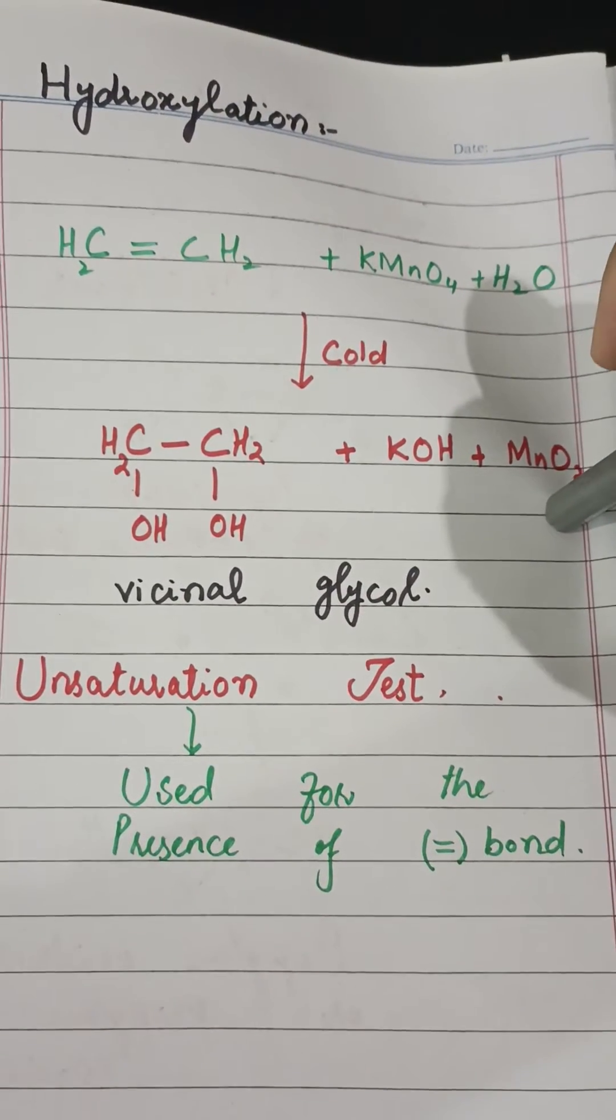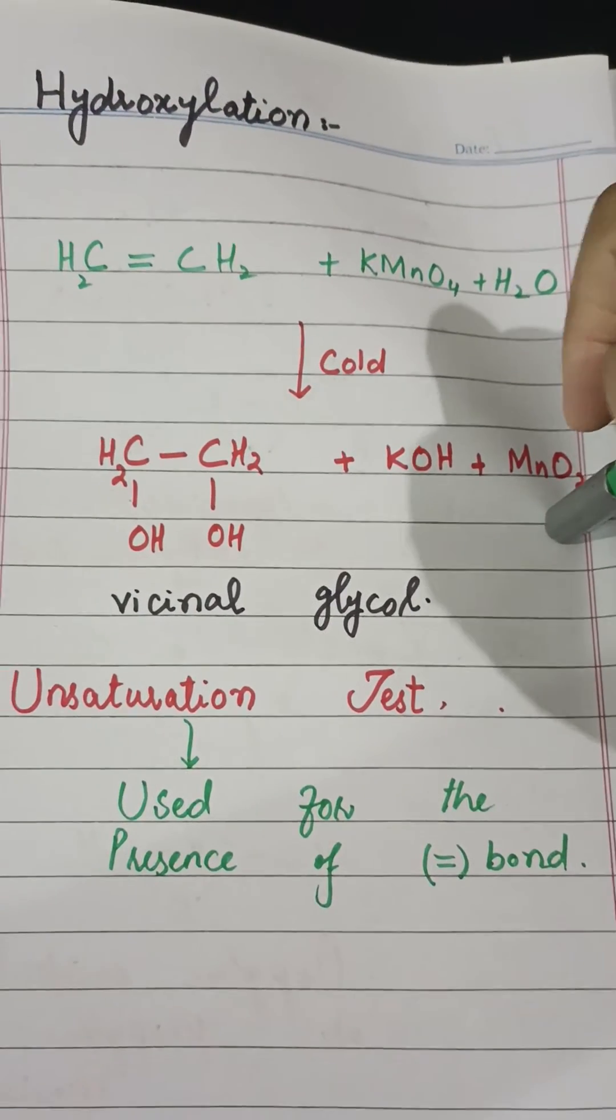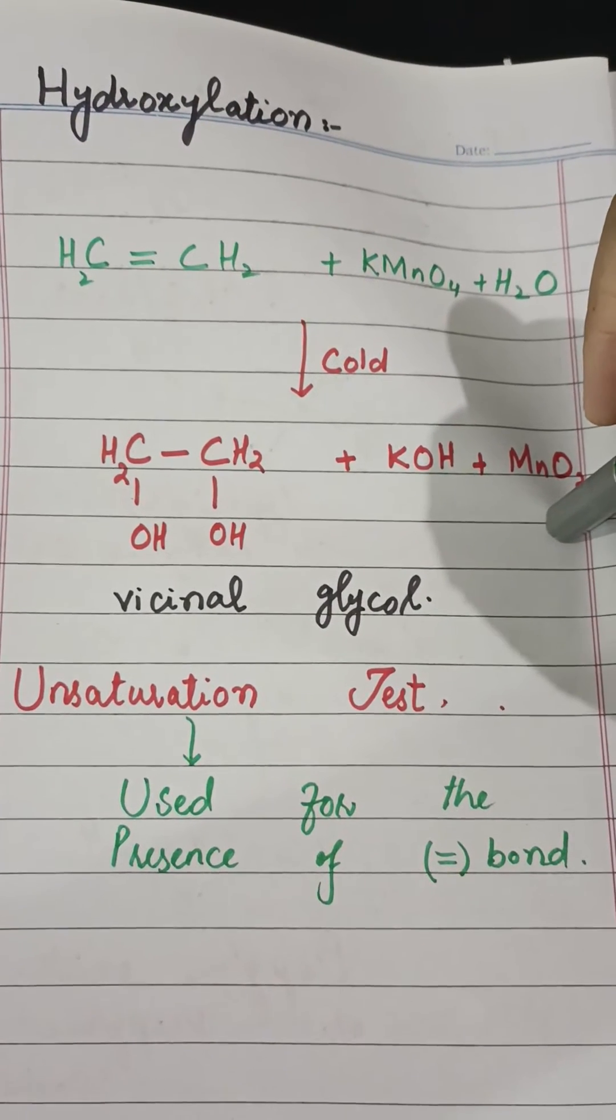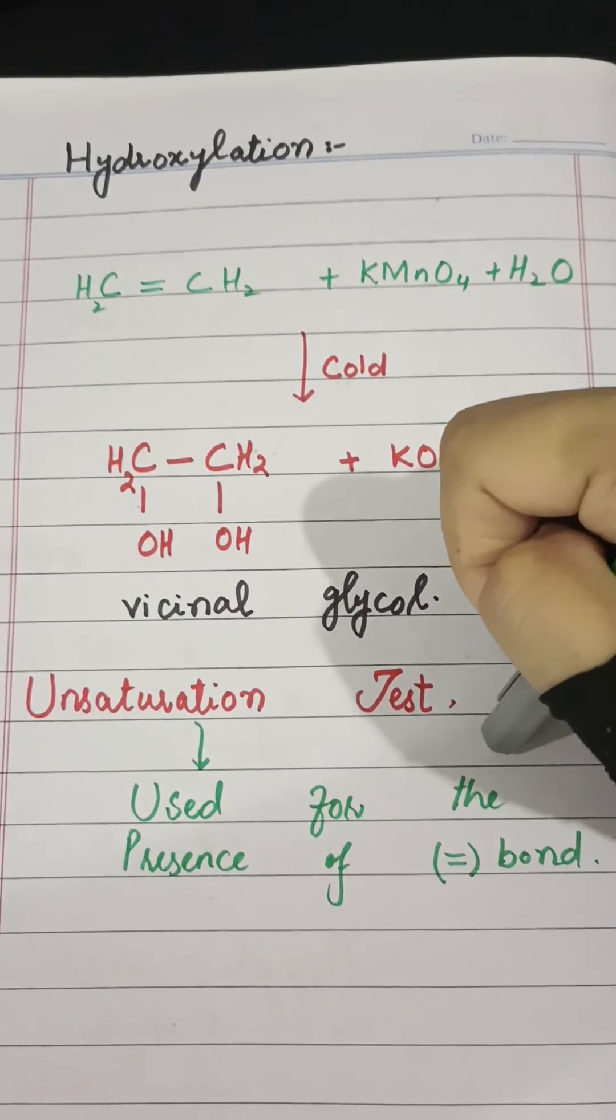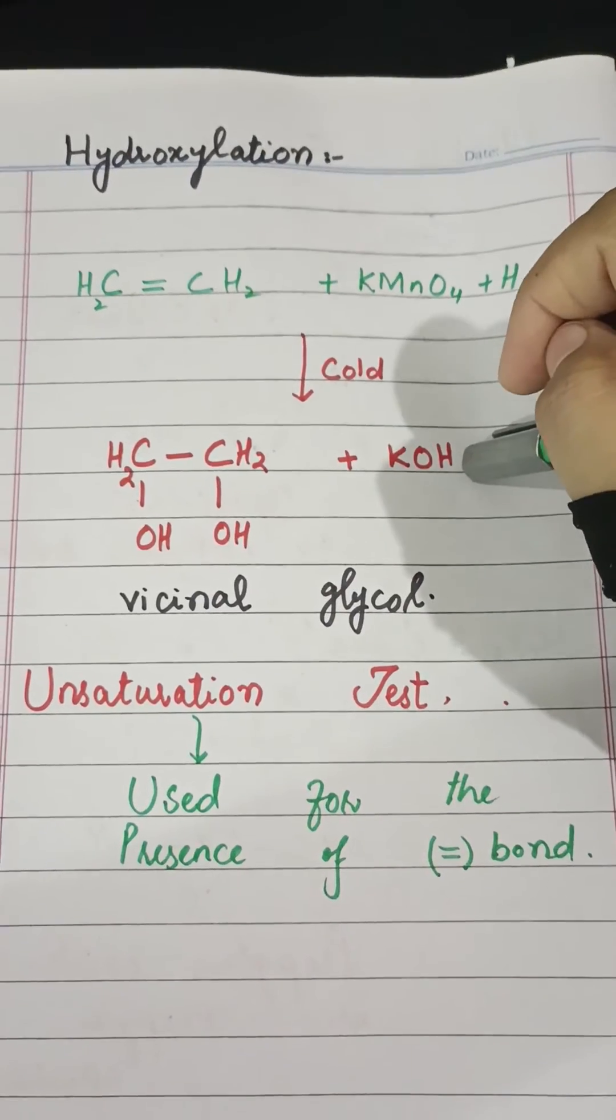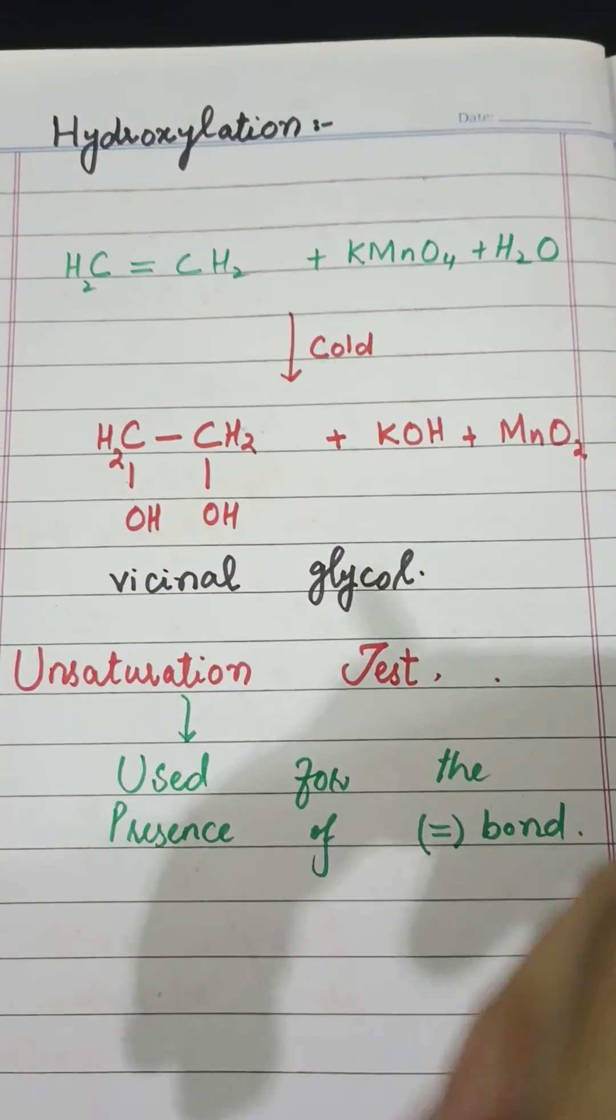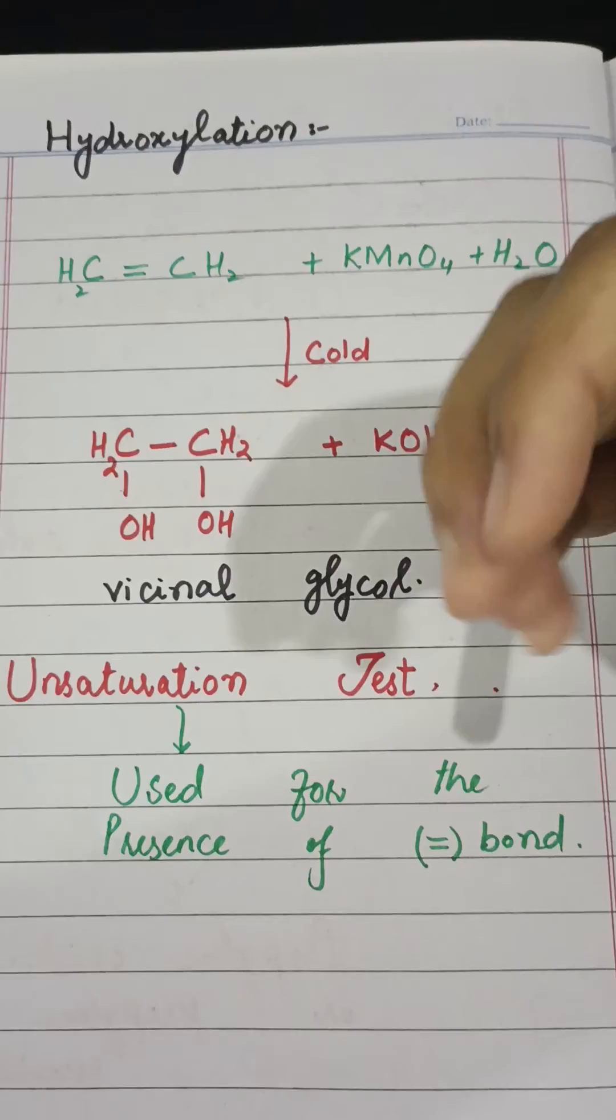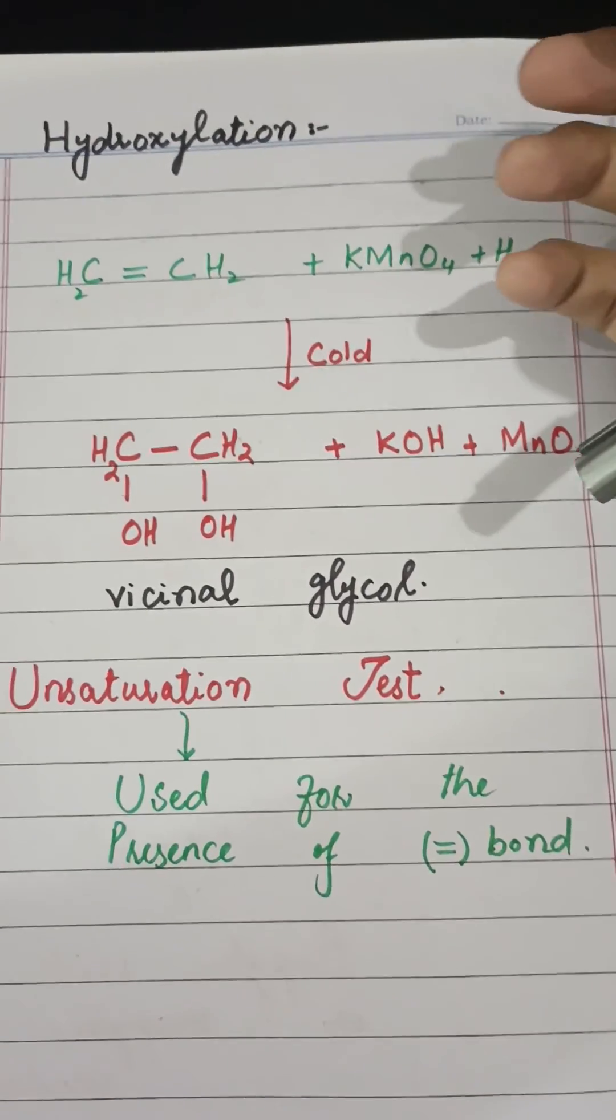This is also known as a confirmation test for the presence of unsaturation of the double bond. You can also use the term unsaturation test for this. This is used for the confirmation of the presence of a double bond in any compound or mixture of compounds.